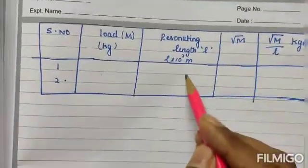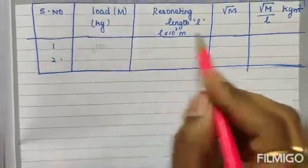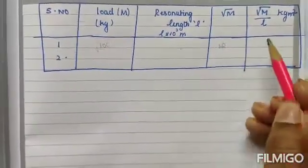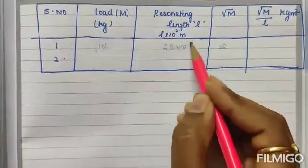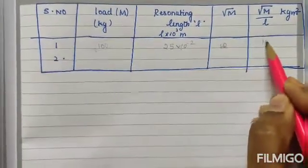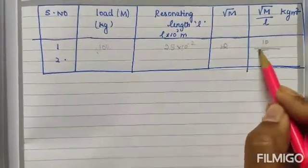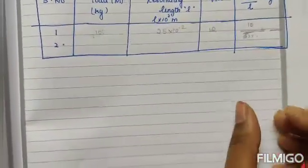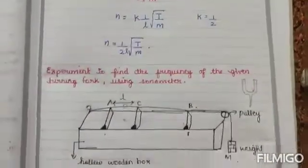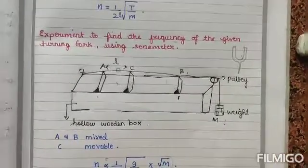Looking at the tabular column: load m gives a distance L. For example, m = 100 gives √100 = 10. Then root(m) divided by L — for example, L = 25 × 10⁻² meters, so root(m)/L = 10 / 0.25. For each weight added, one n value is calculated. The average of all n values gives the frequency of the tuning fork. This completes section 5.1.